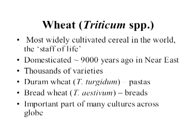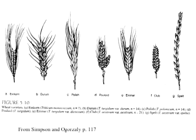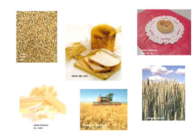Wild wheat species still occur today in places like Iraq, Iran, and Turkey, although most production now comes from Ukraine, the U.S., Canada, China, India, etc. Some of you may have heard of spelt — you can see it as the long, skinny variety in this picture. Wheat, like rice, is transformed into many different products, including breads and pastas.